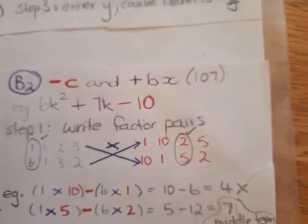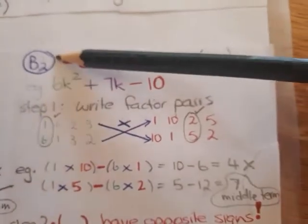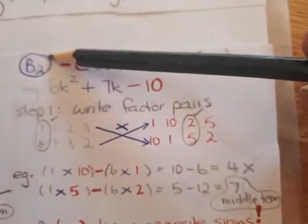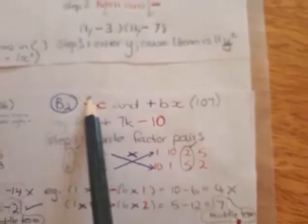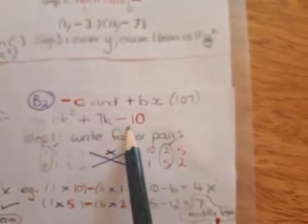Okay, for the last possible method, which we call the B2, it is also where your C, your third term, is negative. Third term is negative.